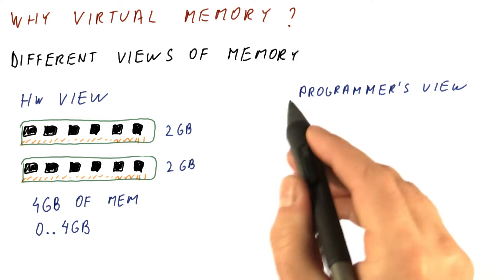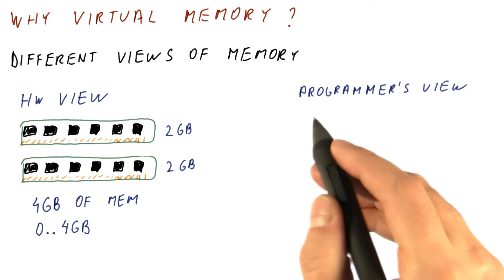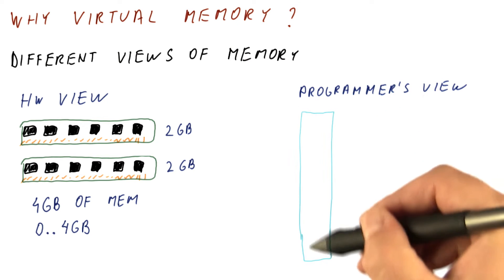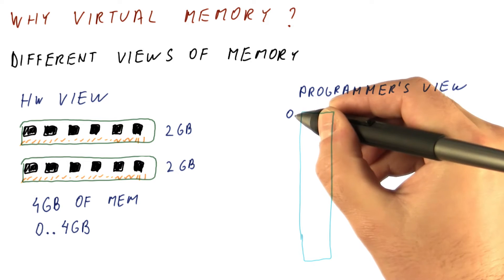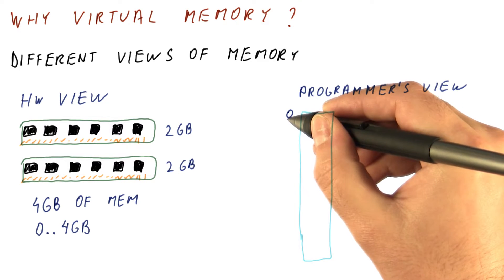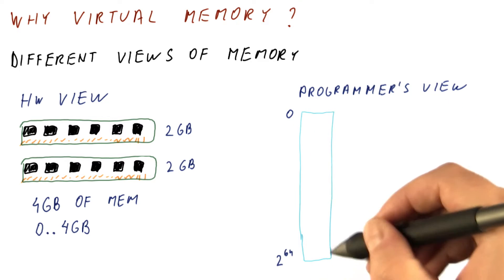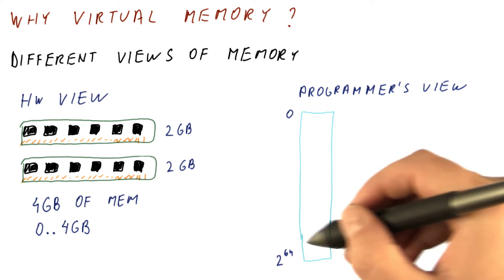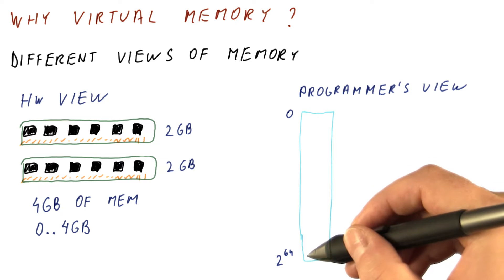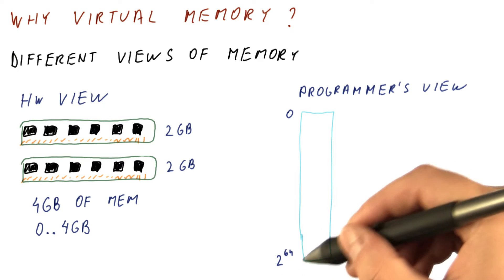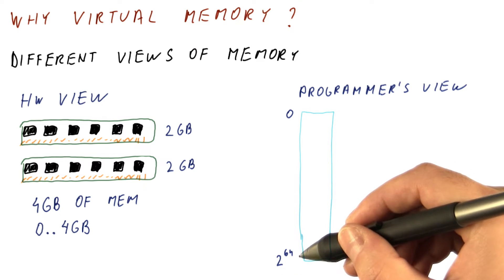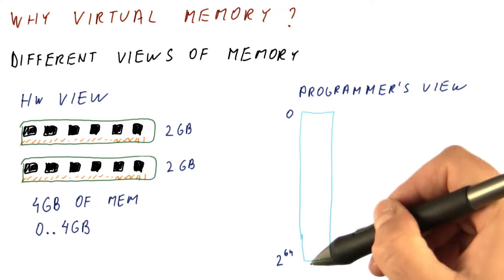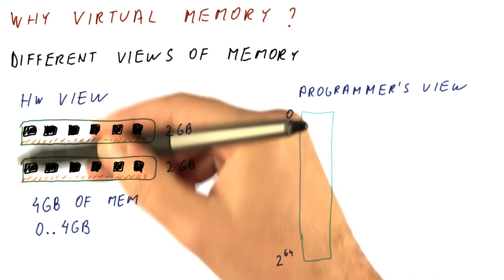In contrast, the programmer's view of memory is that it's a huge array with addresses that go from zero to a very, very large number if it's a 64-bit machine — this is many, many gigabytes. Obviously, this is much more than what the machine really has.